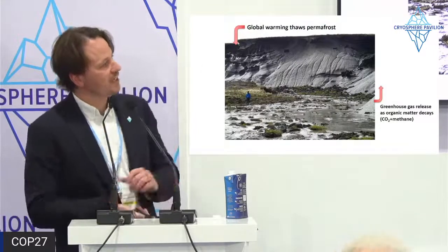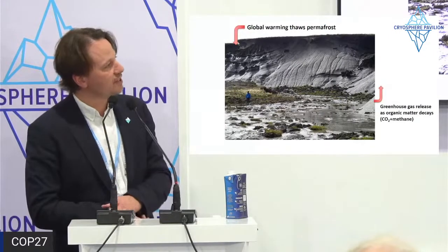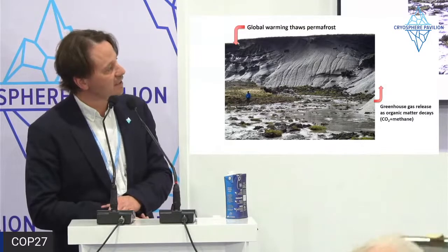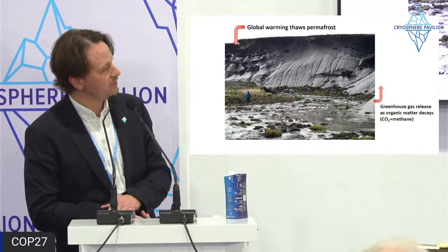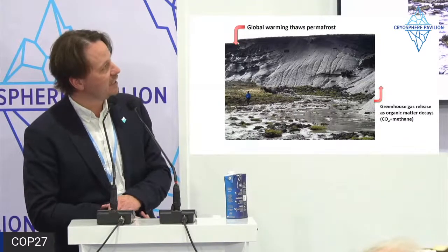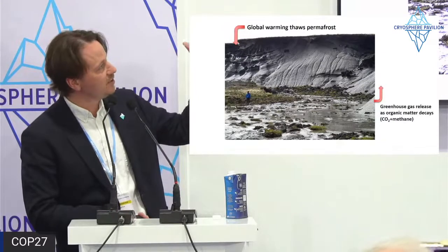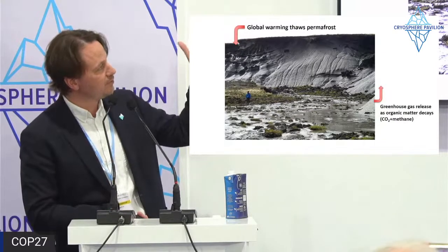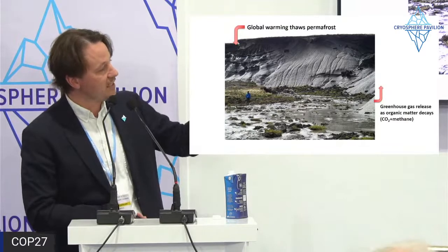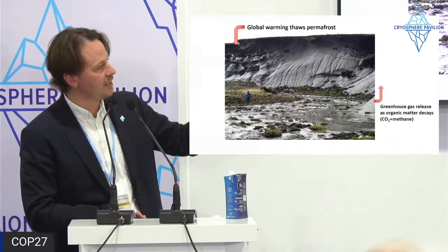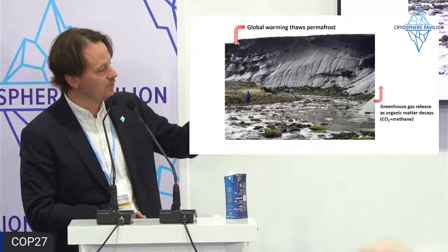The permafrost carbon feedback is an extremely long-term committed emission source to the atmosphere driven by our relatively near-term emissions. This image illustrates the permafrost carbon feedback — the scale is massive, with a person in the foreground for scale, actually a professor from the Alfred Wegener Institute. The feedback system is that warming thaws permafrost, and even more greenhouse gases are released as organic matter decays and microbes consume it to release CO2 and methane.